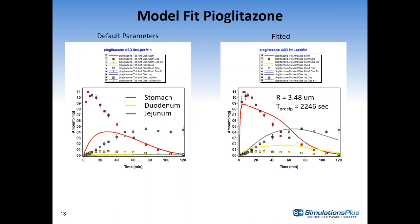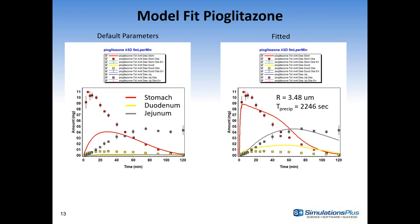With default parameters of 25 microns particle size, we optimized and calculated the precipitation time of pioglitazone as it moves from the high-solubility gastric environment to the duodenum and then the collection end compartment. We found a precipitation time of about 2,200 seconds was needed to fit the dataset. Simple precipitation assays from literature showed times ranging from 100 to 1,000 seconds, suggesting the ASD model may provide more realistic precipitation times than simpler experiments.